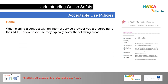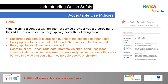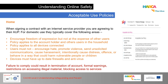At home, when signing a contract with an internet service provider, you are agreeing to their AUP. For domestic use, AUPs typically encourage freedom of expression, but not at the expense of other users. The policy applies to the account holder and other users in the household, and to all devices connected to it. Users must not encourage hate, promote violence, send unsolicited communications, cause harassment, intentionally cause distress, or behave in a way that could harm vulnerable people or children. Devices must have up-to-date firewalls and antivirus. Failure to comply could result in termination of the account, formal warnings, restrictions on accessing illegal material, and blocking access to services.